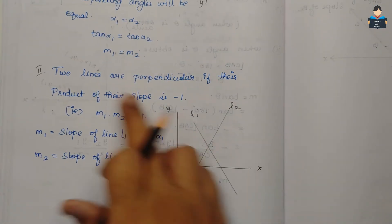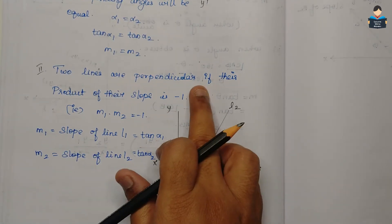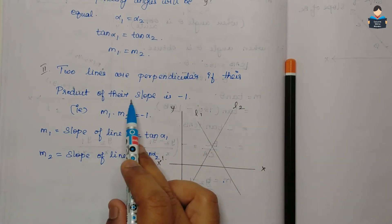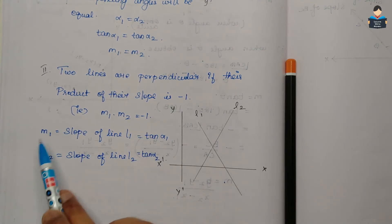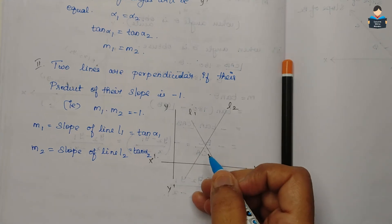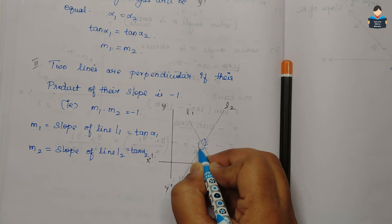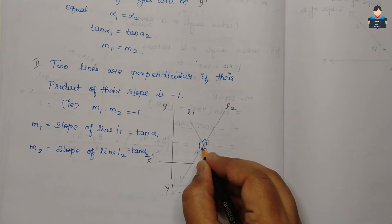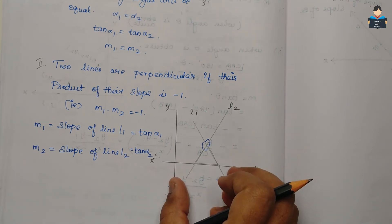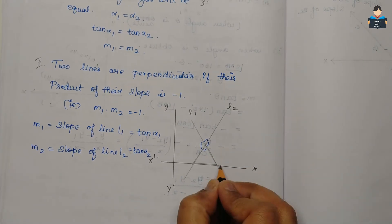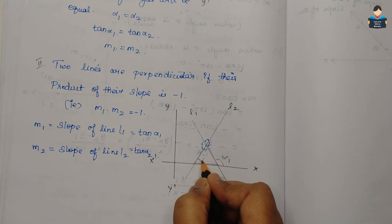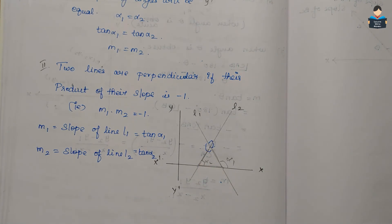Next: two lines are perpendicular if the product of their slopes is minus 1, that is M1 times M2 equals minus 1. For two perpendicular lines, the angle between them is 90 degrees. We consider the triangle formed and the inclination angles alpha1 and alpha2.